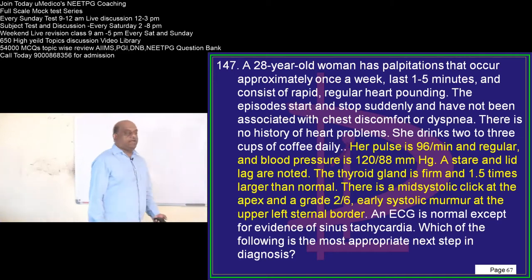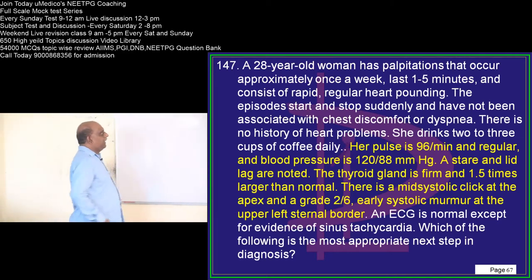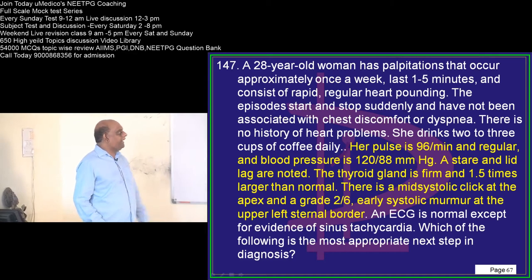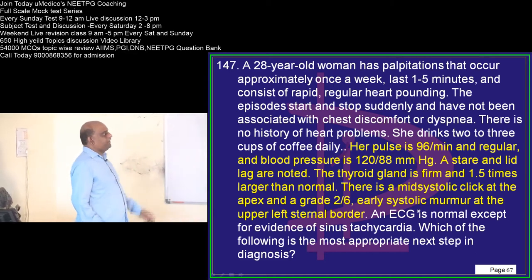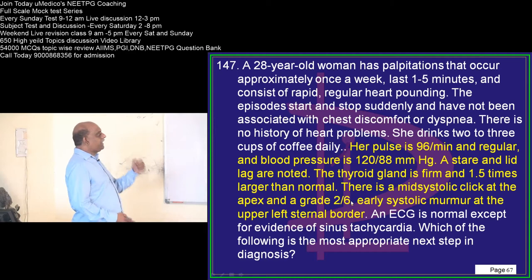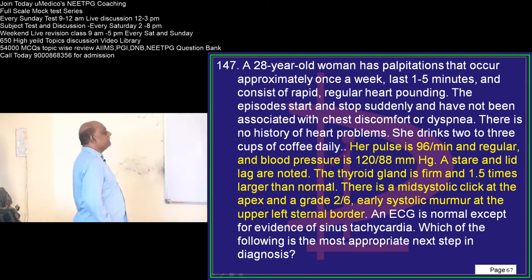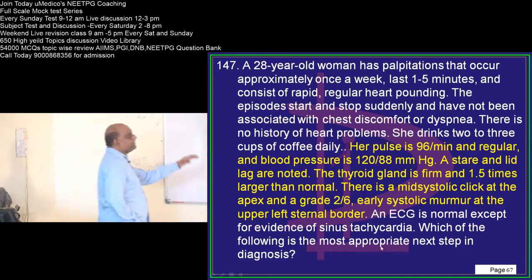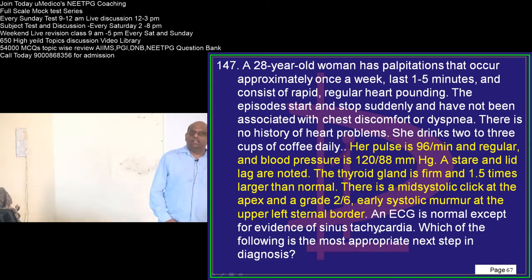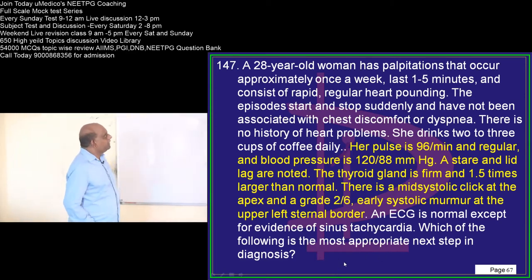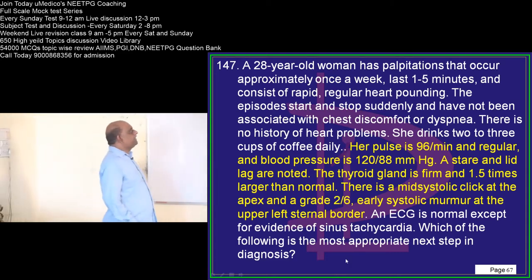A 28-year-old woman has palpitations that occur approximately once a week. The thyroid gland is very firm. There is a mid-systolic click at the apex, which is a grade 2 over 6, early systolic murmur at the upper left sternal border. There is sinus tachycardia and she is having dyspnea.